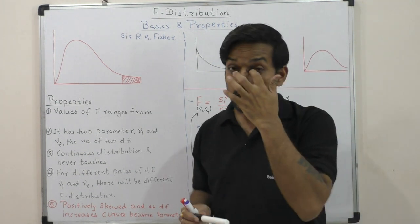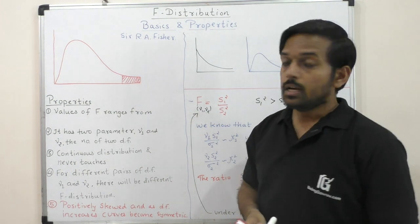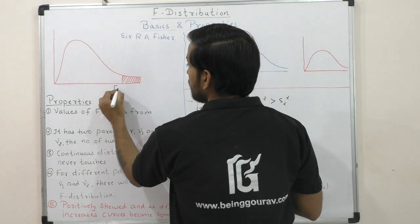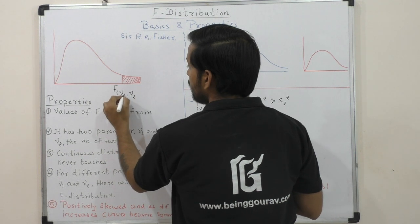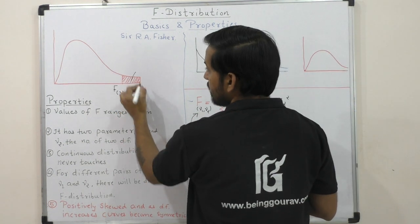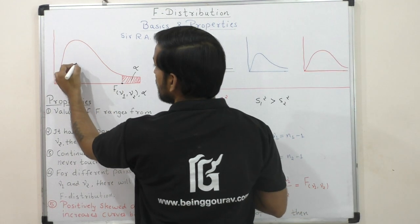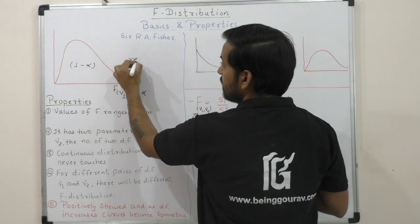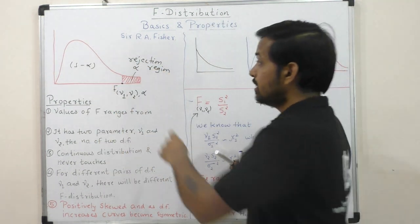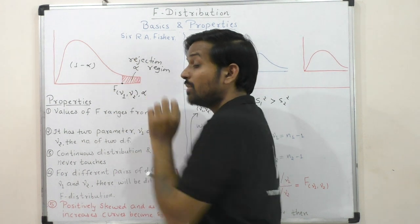Now we look at F distribution's properties. The F distributional curve is defined by degrees of freedom ν1 and ν2, and a significance level alpha. The area in the right tail equal to alpha gives the F critical value. The remaining area of 1 minus alpha is called the rejection region, and the area before it is the acceptance region. In the rejection region we reject the null hypothesis; in the acceptance region we accept the null hypothesis.